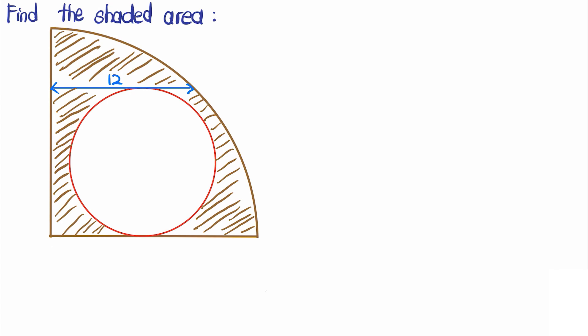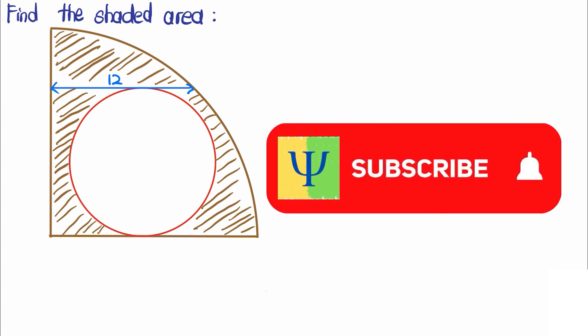We are asked to find the shaded area of the following figure where we are given a quarter circle. There is a circle inserted inside of the quarter circle such that it is tangent to one side of the quarter circle, and it is drawn such that there is a tangent line of length 12 which can be drawn inside the quarter circle.